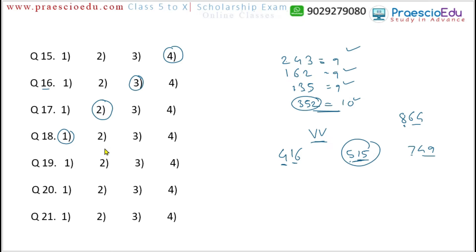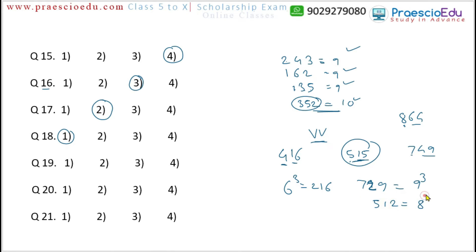Question 19: 216 is 6 cubed. 729 is 9 cubed. 512 is 8 cubed. But 256 is not a perfect cube number. So option 3 (256) for question 19 is the different one.